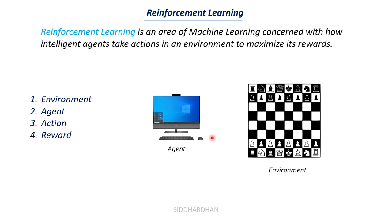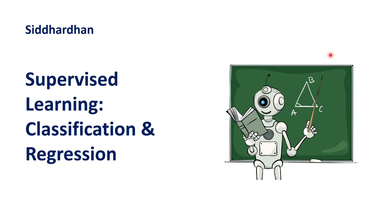Now the definition makes more sense: reinforcement learning is concerned with how intelligent agents take actions in an environment to maximize its reward. The applications of reinforcement learning mainly include building game-playing systems, game-playing AI, robot walks, and so on. To summarize the three types: supervised learning uses labeled data, unsupervised learning uses unlabeled data, and reinforcement learning involves an agent, environment, action, and reward.